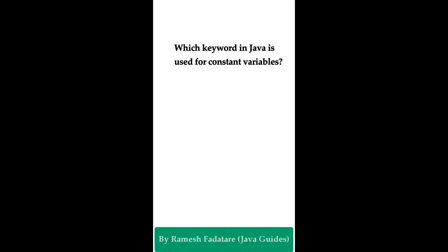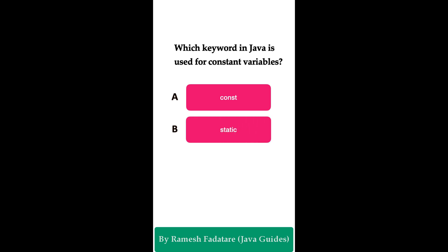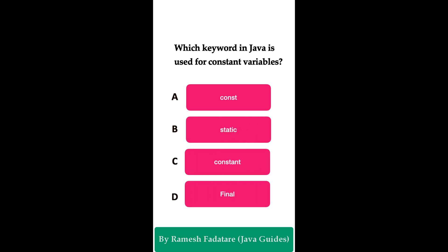Welcome to Java Quiz Series. Which keyword in Java is used for constant variables? Option A: const, Option B: static, Option C: constant, Option D: final. You have five seconds to answer. The correct answer is Option D: final. In Java, the final keyword is used to declare constant variables.